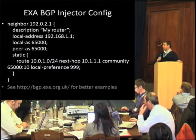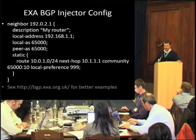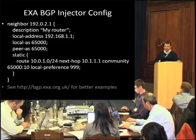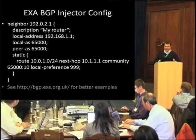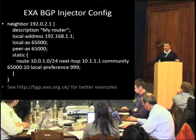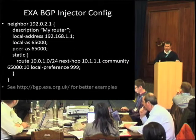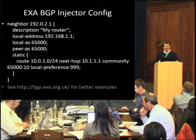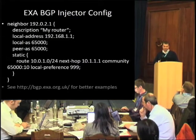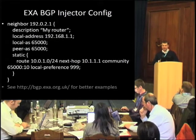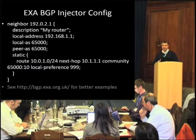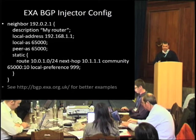This is an example of the configuration. It does look quite a lot like a Juniper BGP peer, but you can see there's a static block inside it as well, where to that particular router we're injecting that slash-24 with a particular next hop and a particular community. There are more examples if you go to the bgp.exa.org.uk page, which will show you some of the really cool stuff you can do with it and some real-life examples.